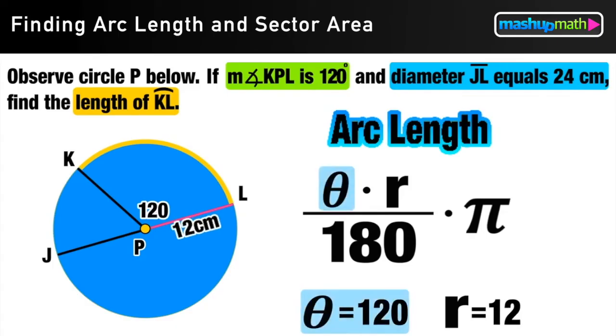And now we are ready to substitute those values into the arc length formula. Replace theta with 120. Replace R with 12. And then we can evaluate.